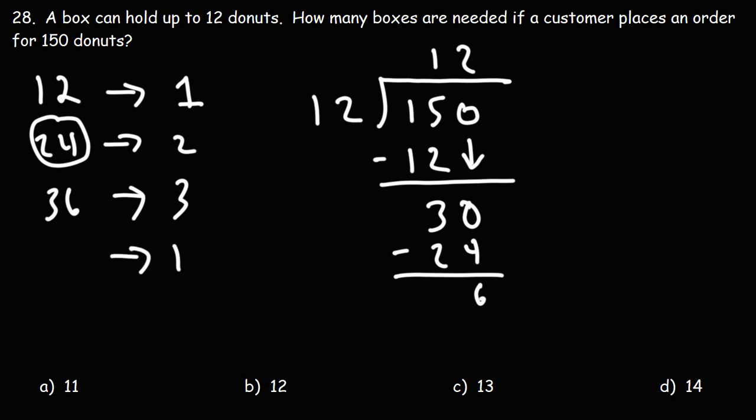If we have 12 boxes, that's going to hold up to 144 donuts because 12 times 12 is 144. 13 boxes—12 times 13, that's 156. If we only have 12 boxes, we can't fit 150. The most we can fit is 144, so we need an additional box.